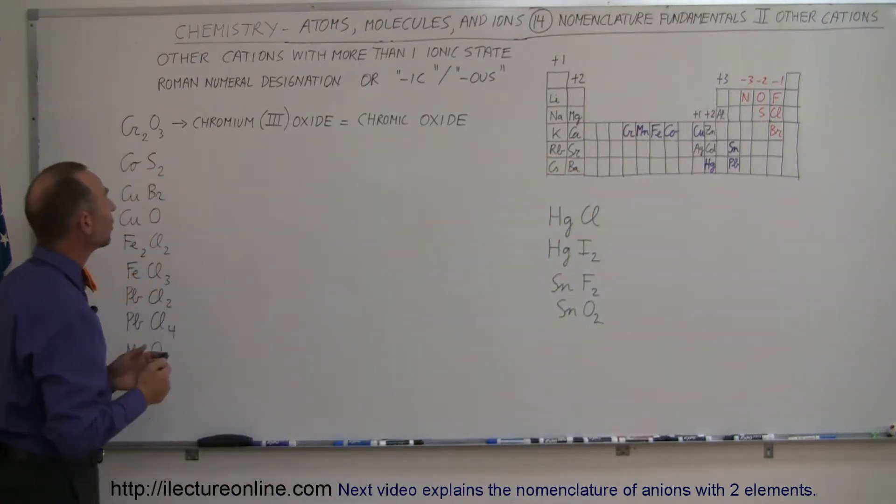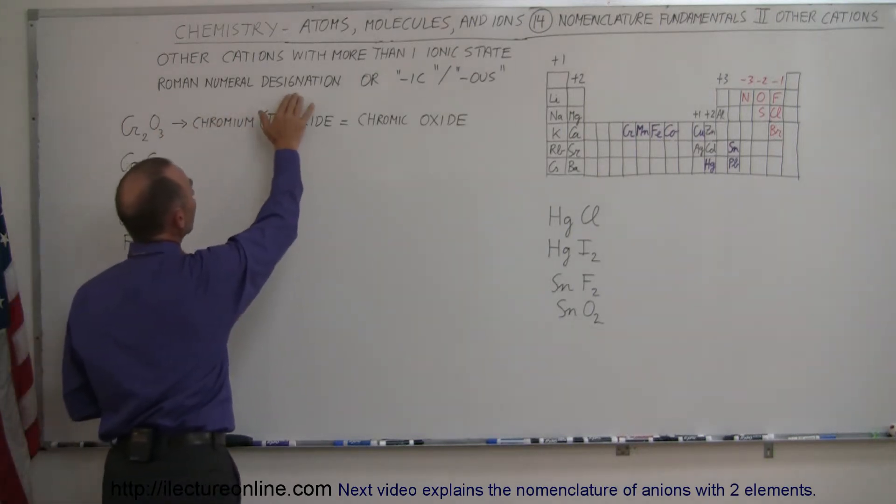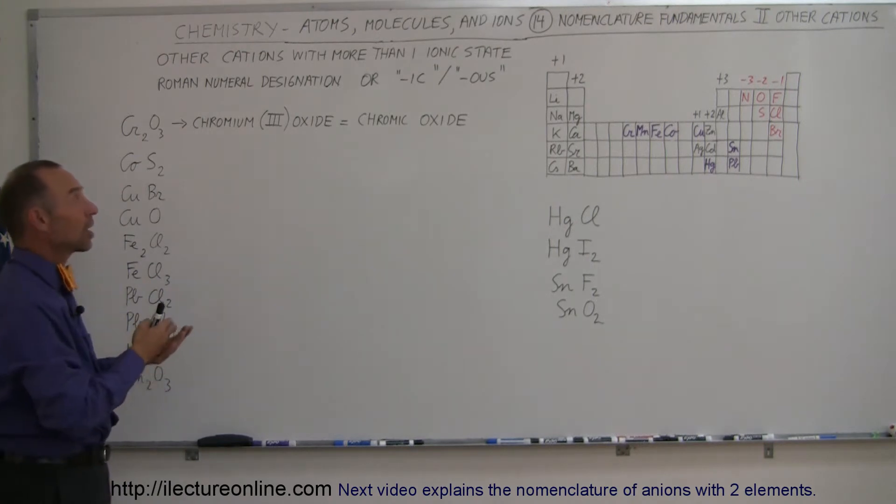And so what we do here is use either the Roman numeral designation, which means we use a one, two, three, or four to indicate what the ionic state would be, a plus one or plus two or plus three or plus four.